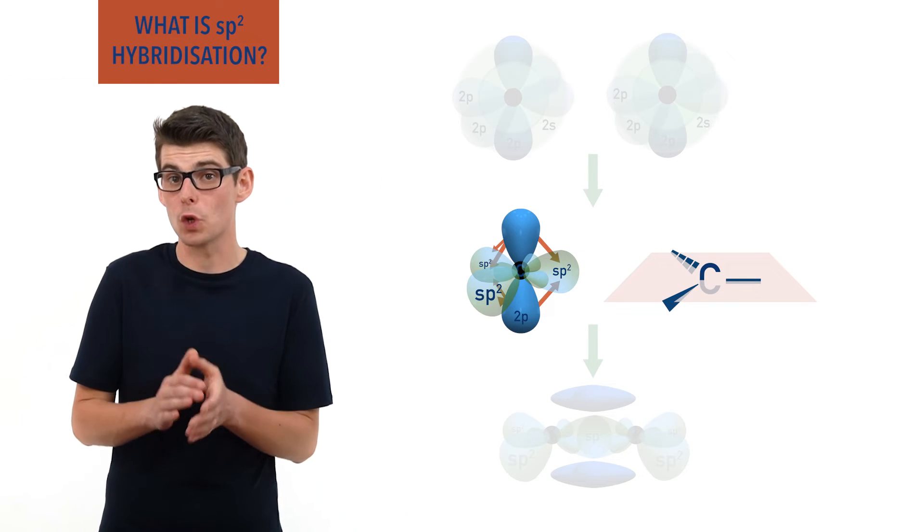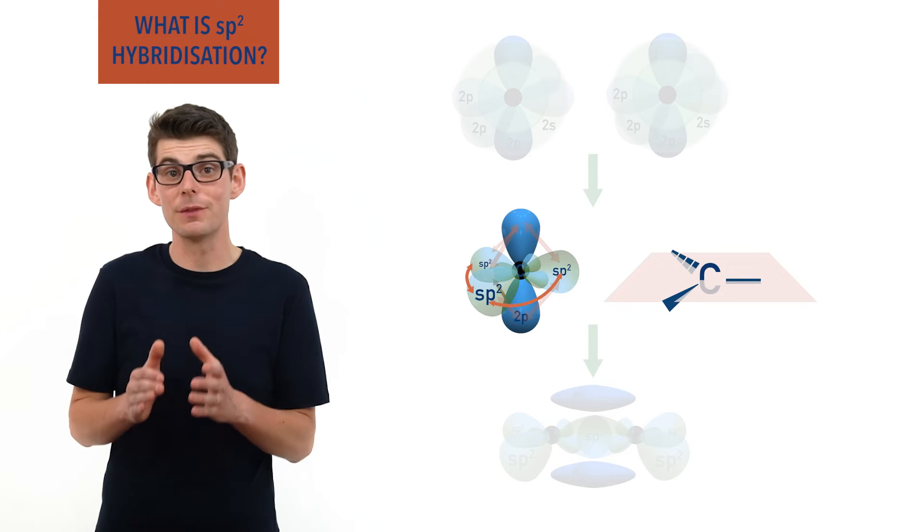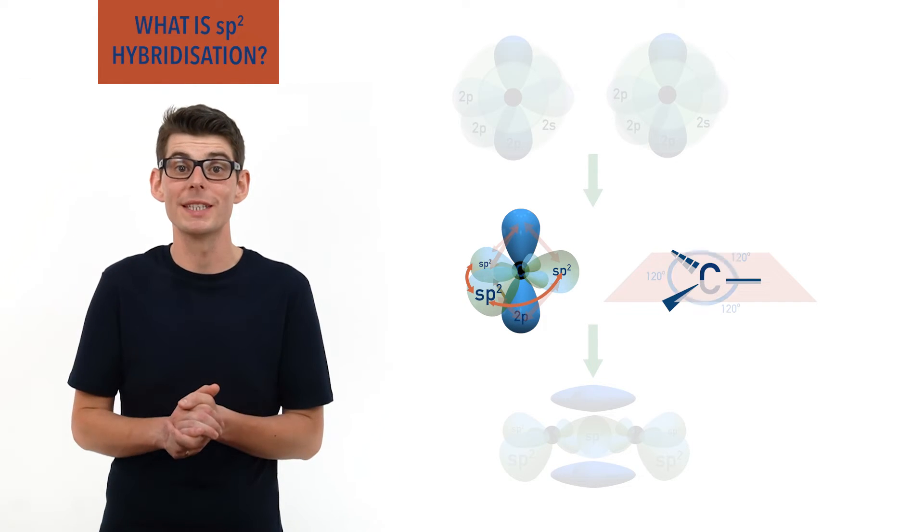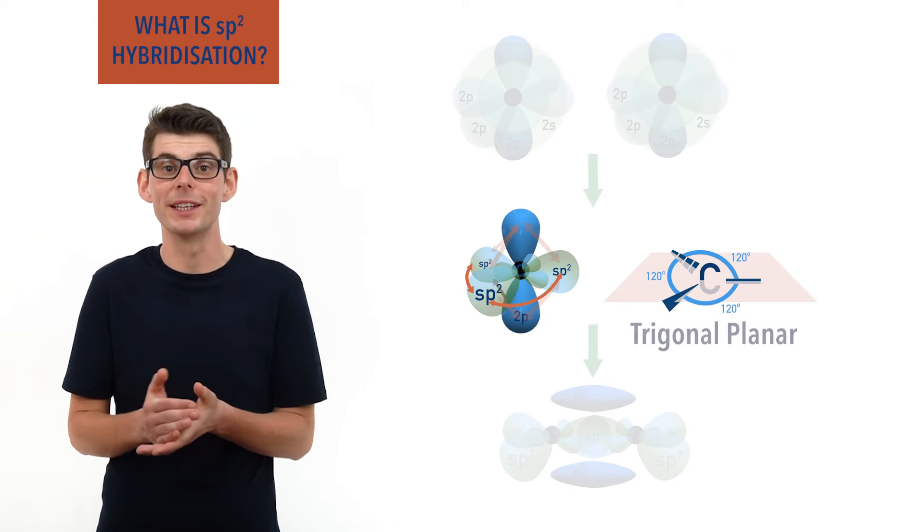The sp2 orbitals also repel each other, meaning they end up equally far apart, giving bond angles of approximately 120 degrees and a trigonal planar arrangement.